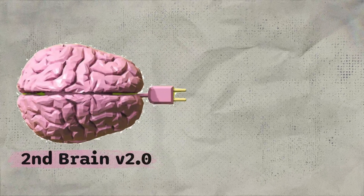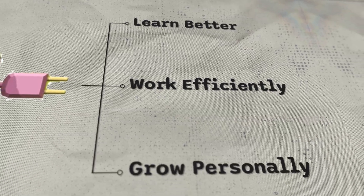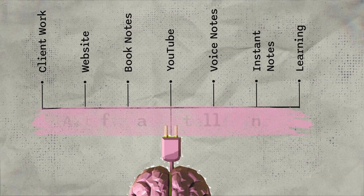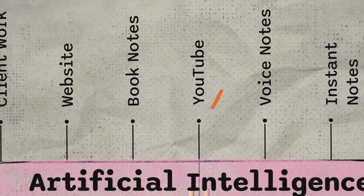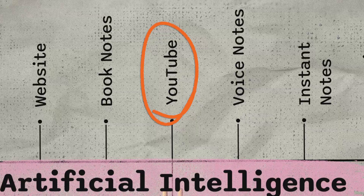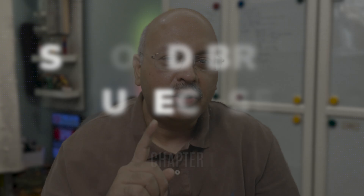I use a system called the Second Brain 2.0 to learn better, work more efficiently, and to grow personally. What's different from other Second Brains is that it's distributed and held together like glue using AI. YouTube-based learning has a different database structure to voice notes or instant journaling of thoughts. You can use it too for studying, for research, or work information, and you can reach for this information when you need it.